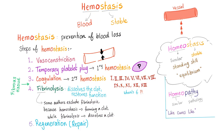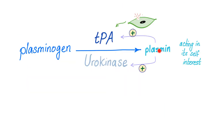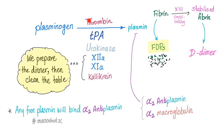Hemostasis, or prevention of blood loss, has many steps. We've talked about vasoconstriction, temporary platelet plug, and coagulation. Now we're talking about fibrinolysis. Plasminogen is converted into plasmin thanks to TPA. Plasmin then activates more TPA, which converts more plasminogen into plasmin — plasmin acting in its own interest. Plasminogen is activated by thrombin, TPA, urokinase, factors 12 and 11, and kallikrein. Active plasmin converts fibrin into fibrin degradation products, and stabilized fibrin into D-dimer.